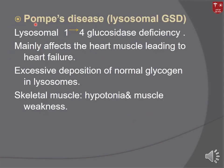Another type of metabolic muscle disorder is Pompe disease. The defect is in lysosomal alpha-1,4-glucosidase, the enzyme responsible for breaking down glycogen inside lysosomes. This mainly affects the heart muscle, leading to heart failure with excessive deposition of normal glycogen in lysosomes. Skeletal muscle is also affected, causing hypotonia and muscle weakness.